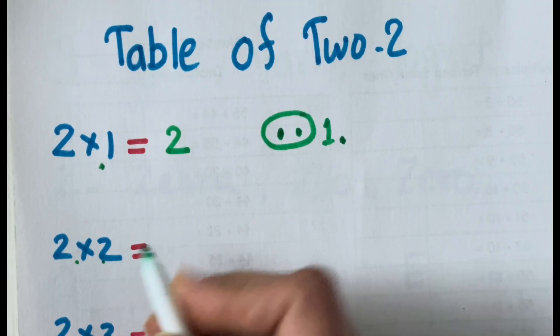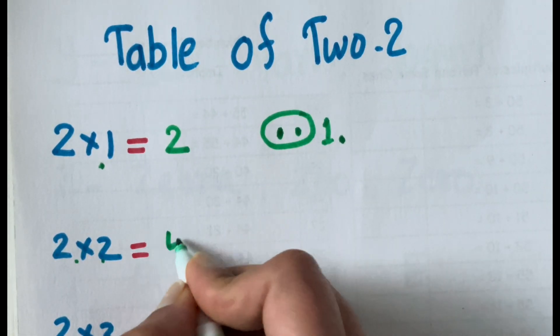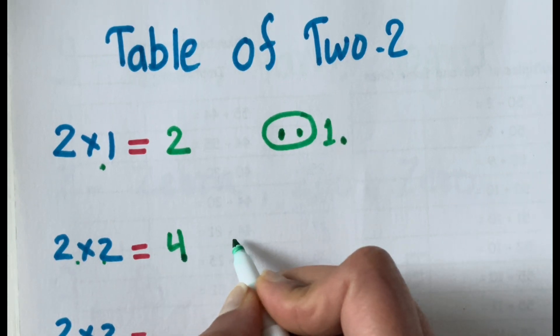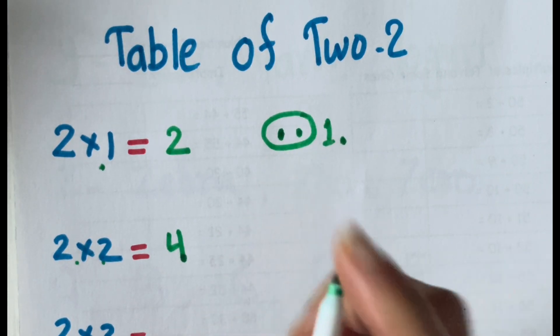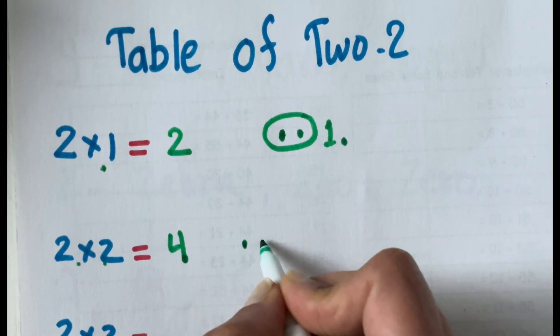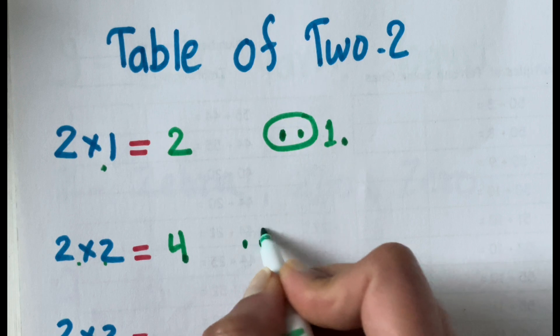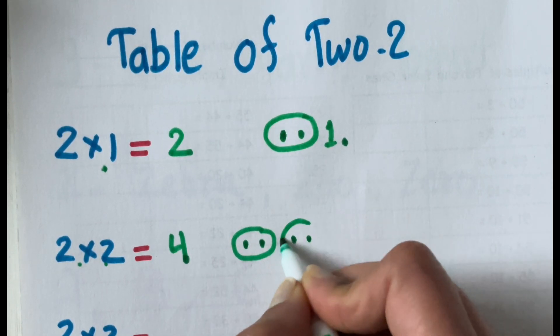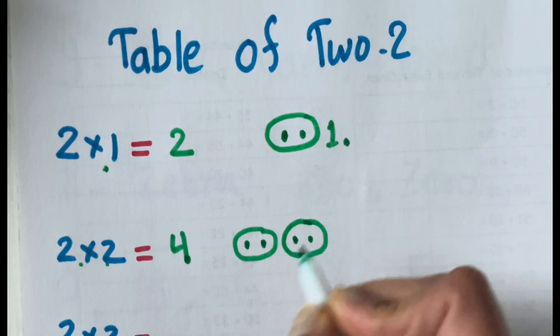2 times 2 is 4. That means 2 groups of 2. 1, 2 — 1 group. 1, 2 — 2 groups.